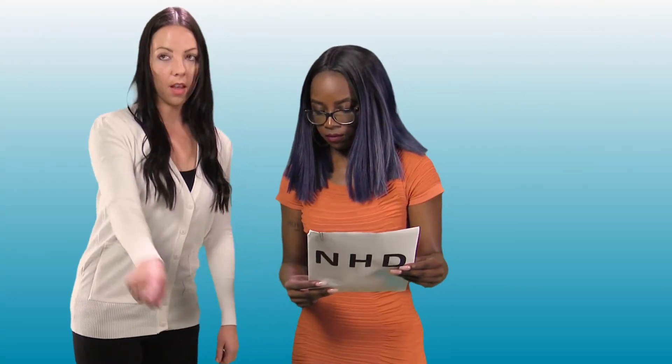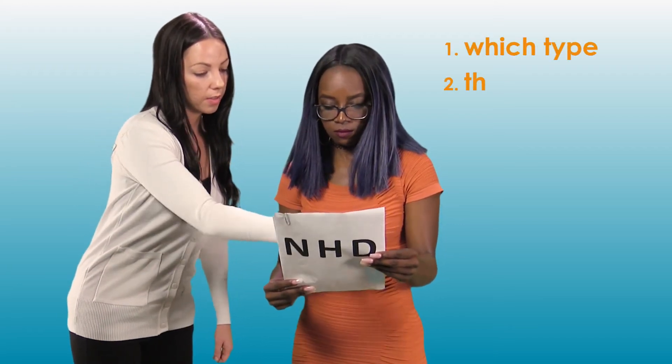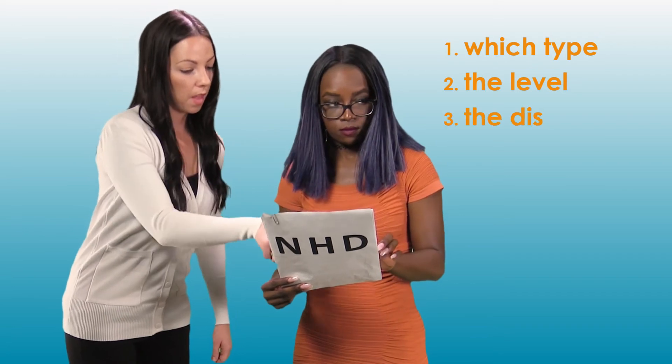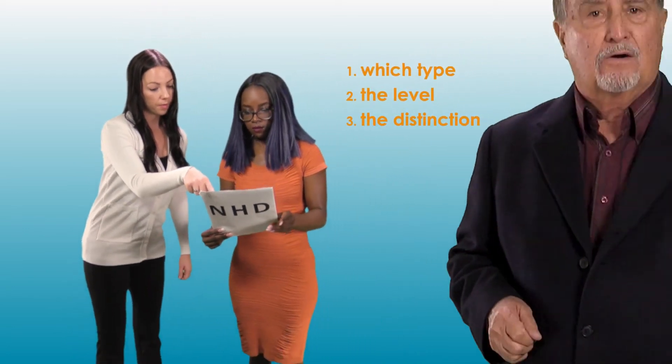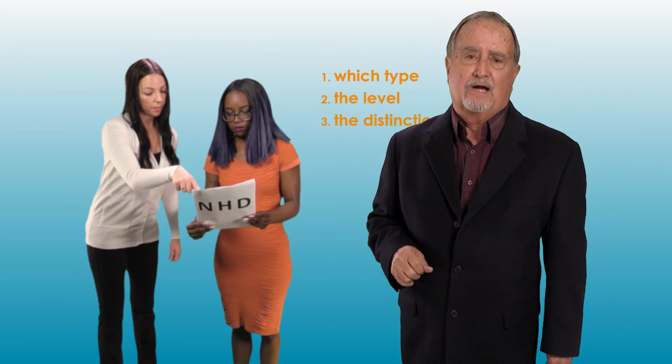If the NHD indicates a seismic hazard, the buyer's agent is then to determine which type of hazard, the level of that hazard, and explain the distinction to the buyer, or be certain that someone else does. The seller's agent has no such affirmative obligation to explain the impact of the disclosures to the buyer.